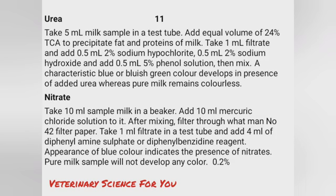Detection of urea — take 5 ml milk sample in a test tube and add an equal volume of 24% TCA to precipitate fat and protein. Take 1 ml filtrate and add 0.5 ml 2% sodium hypochlorite, 0.5 ml 2% sodium hydroxide, and 0.5 ml 5% phenol solution, then mix. A characteristic blue or bluish-green color develops in the presence of added urea, whereas pure milk remains colorless.